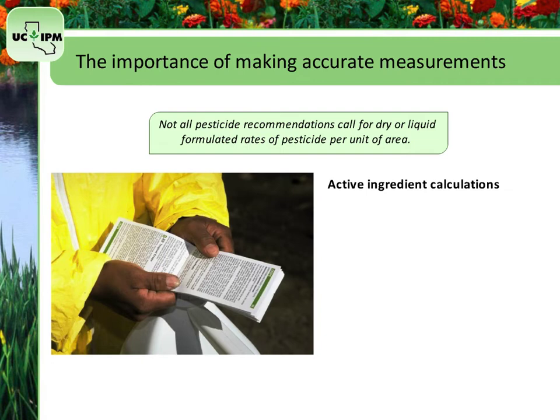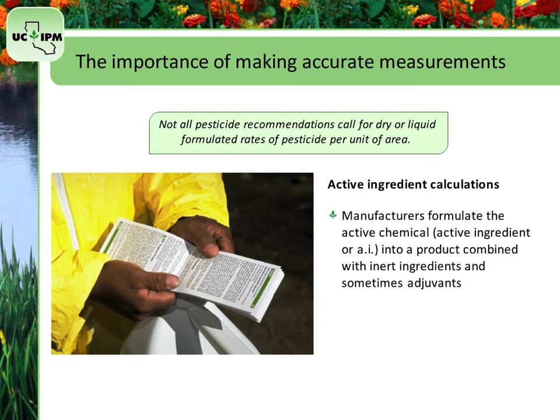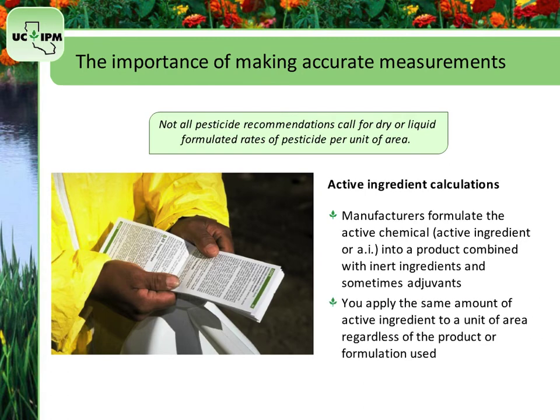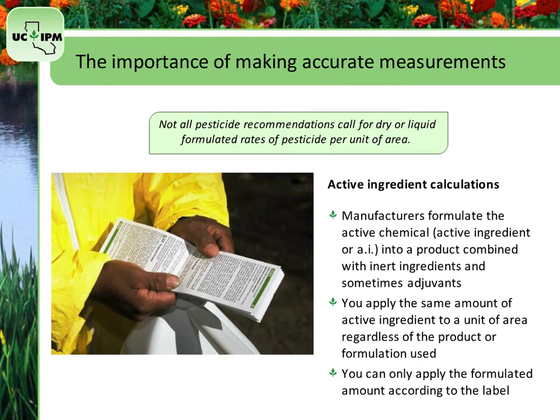Pesticides are rarely sold in their pure state. Manufacturers formulate the active chemical, or active ingredient, into a product combined with inert ingredients and sometimes adjuvants. Using active ingredient calculations allows you to apply the same amount of active ingredient to a unit of area, regardless of the product or formulation used. However, even if the amount of AI is the same, you can only apply the formulated amount according to the label. The next two screens provide examples.